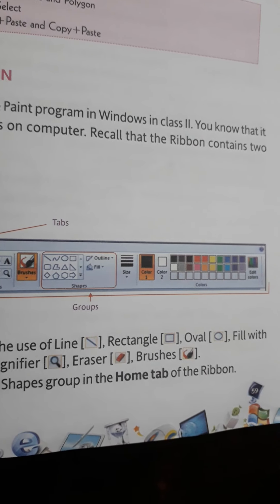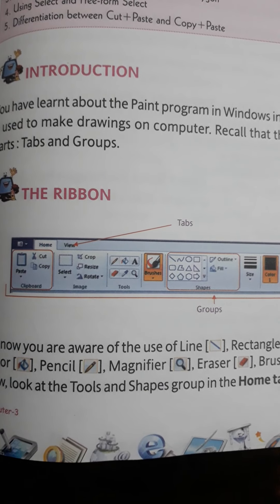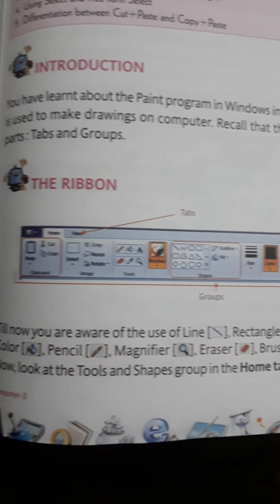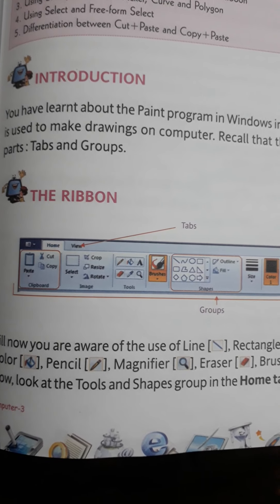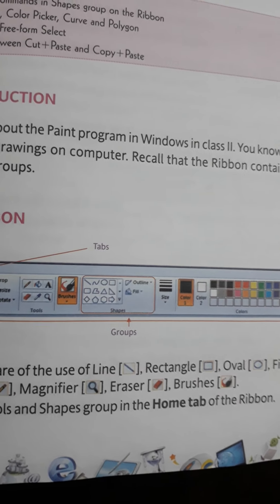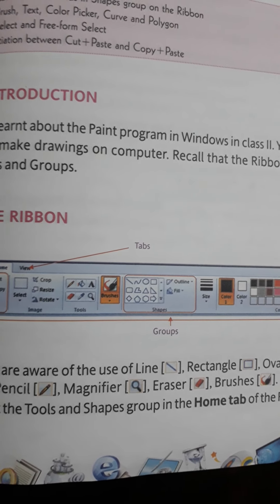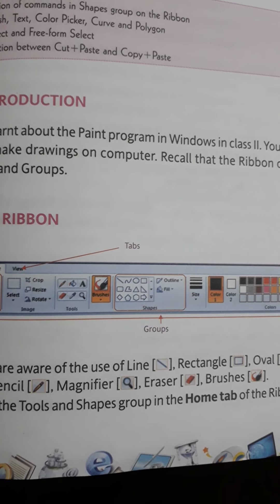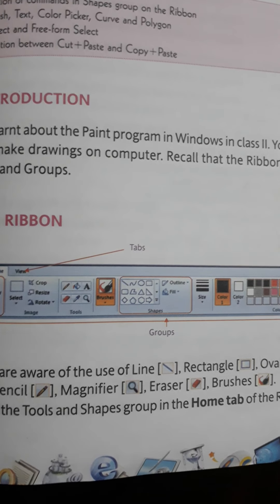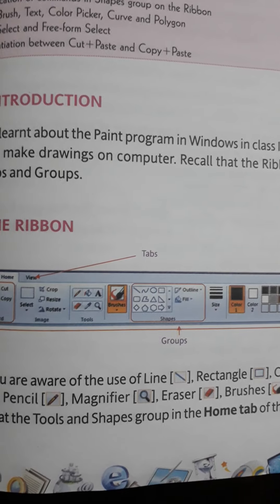Till now you are aware of the use of the Line tool, Rectangle, Oval, Fill with Color, Pencil, Magnifier, Eraser, and Brushes. Now look at the Tools and Shapes group in the Home tab of the ribbon. In the previous class we have seen tools like Line, Rectangle, Oval, Eraser, Magnifier, and Brushes.